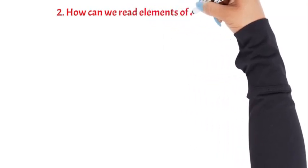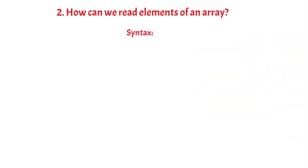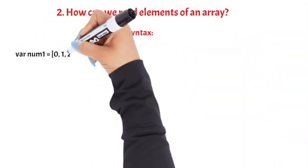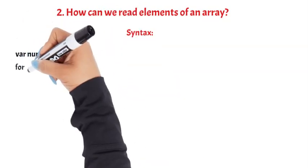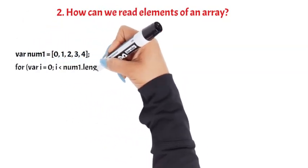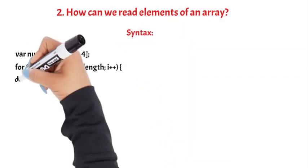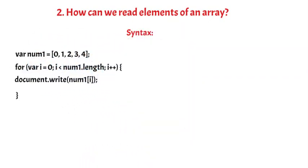How can we read elements of an array? Syntax: var num1 = [0, 1, 2, 3, 4]; for (i = 0; i < num1.length; i++) { document.write(num1[i]); }. Question 3.